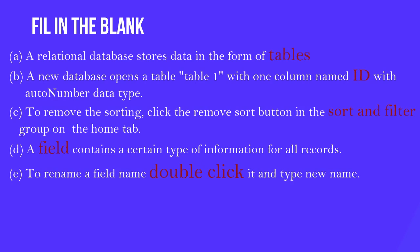C: To remove the sorting, click the remove sort button in the sort and filter group on the home tab. D: A field contains a certain type of information for all records. E: To rename a field name, double click it and type a new name.